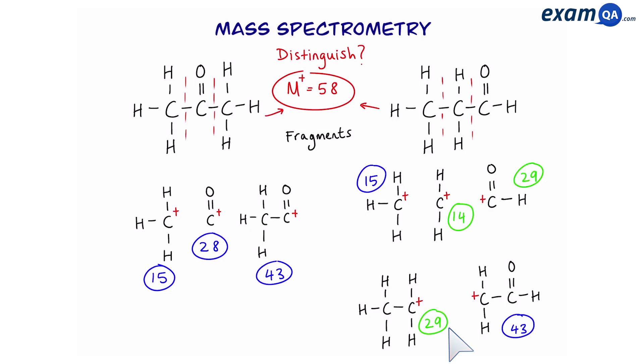And it's this feature of mass spec that we'll use to distinguish between two different molecules. For example, for propanol, we can see that we'll have a peak at 29 or at 14. This will not be present in propanone.